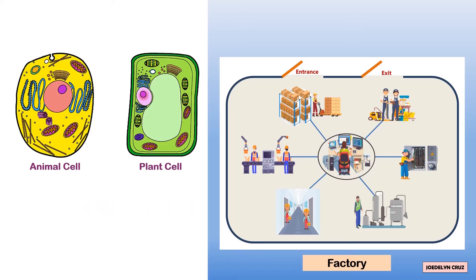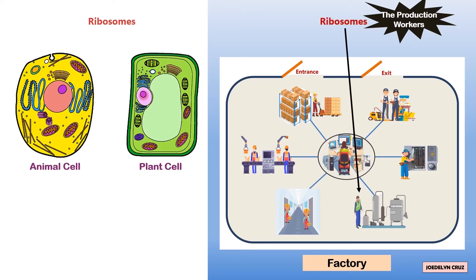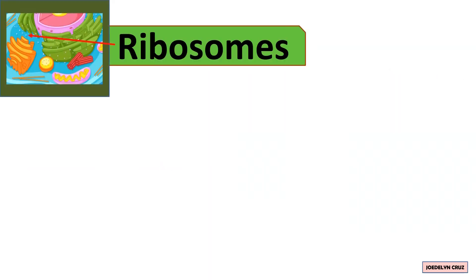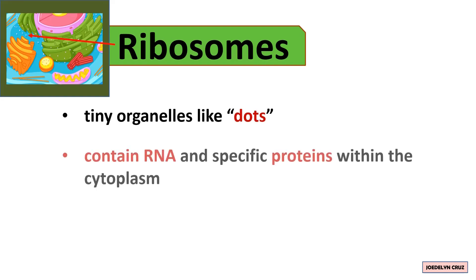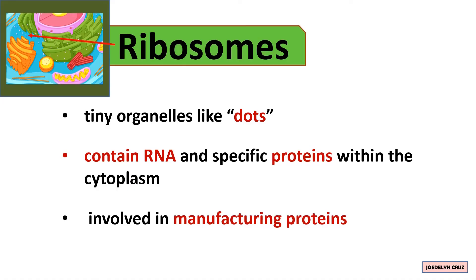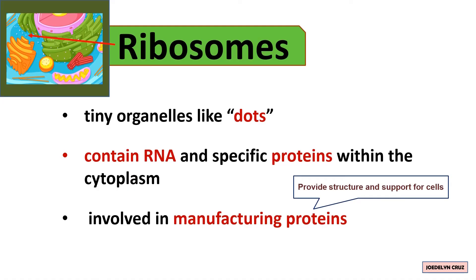The production workers in the factory represent ribosomes. They produce and assemble products in the factory and are also involved in manufacturing proteins. Proteins provide structures and support for cells.